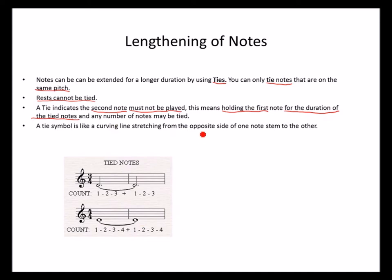The tie symbol stretches from the opposite side of the note stem to the other, or from the note head to the other note head. Here is an example of two tied notes: a semibreve worth four beats tied to another semibreve worth four beats.